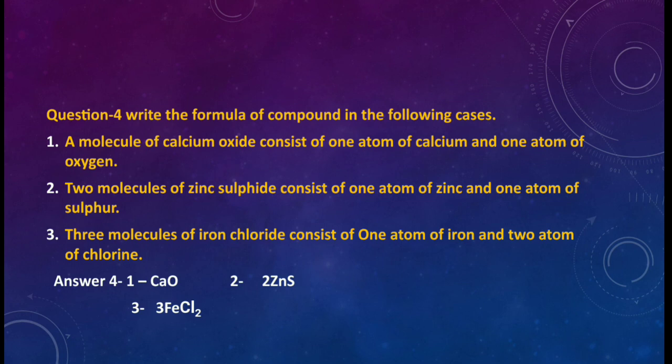Question number 2. The 2 molecules of zinc sulfide consist of 1 atom of zinc and 1 atom of sulfur. Over here 2 molecules of zinc sulfide. So the answer will be 2. Why 2? This 2 number is representing 2 molecules of zinc sulfide. 2. Zn and S. Zn and S. Zn is zinc. 1 atom of zinc and 1 atom of sulfur. That is represented by S.